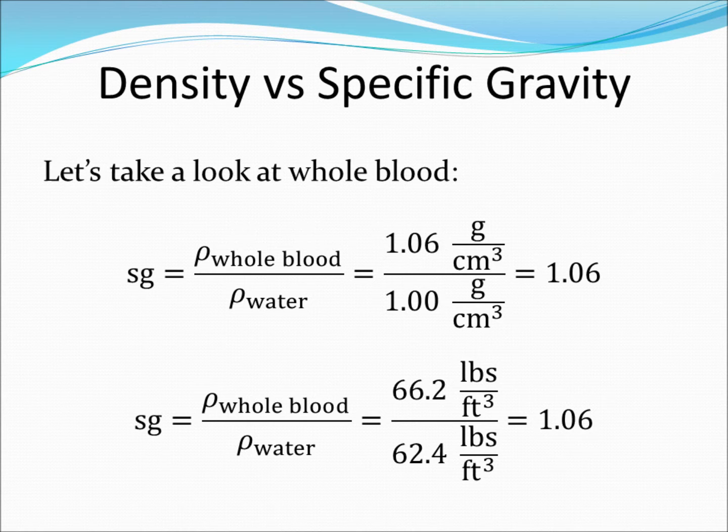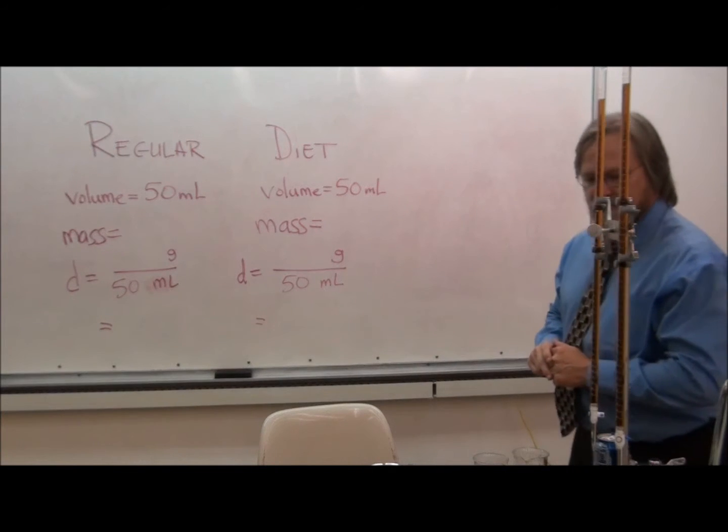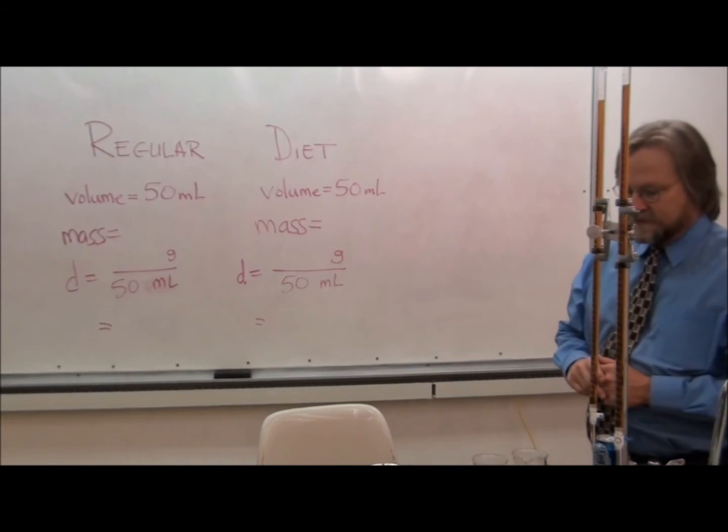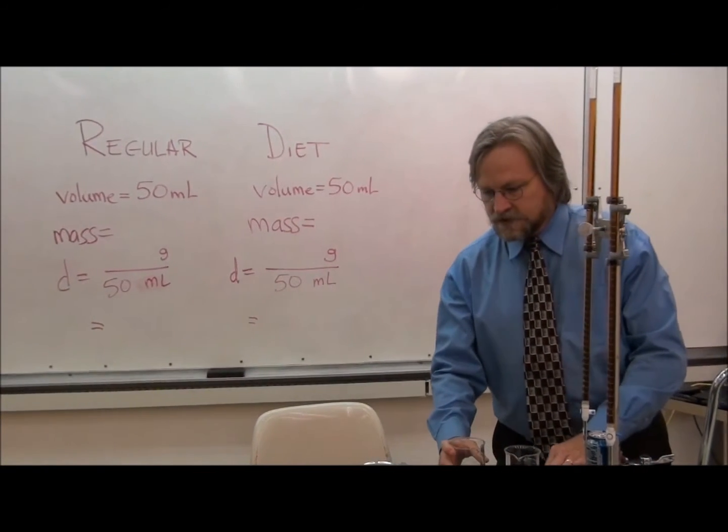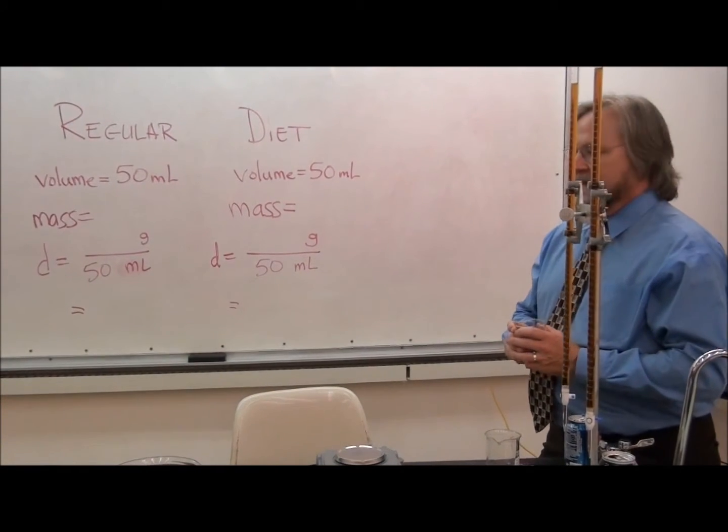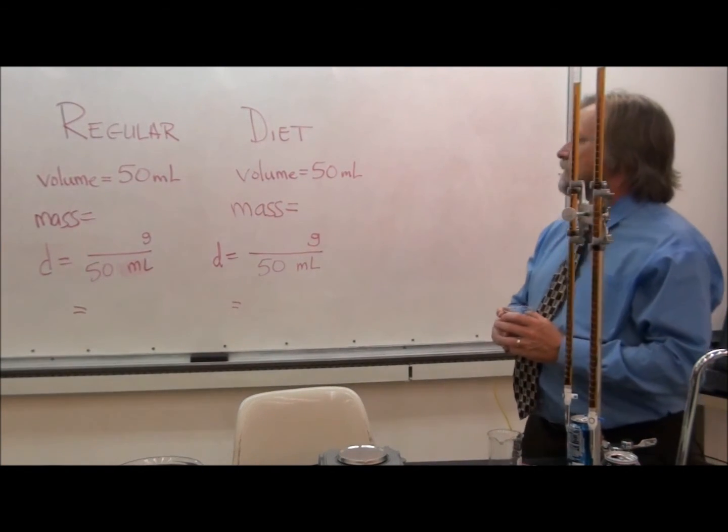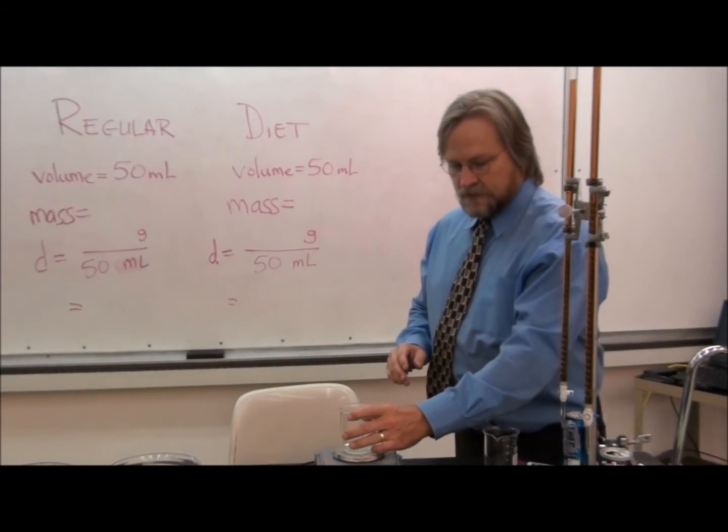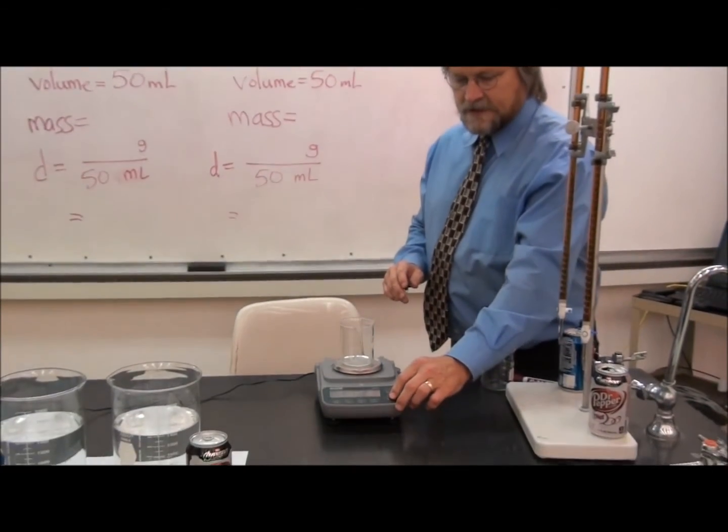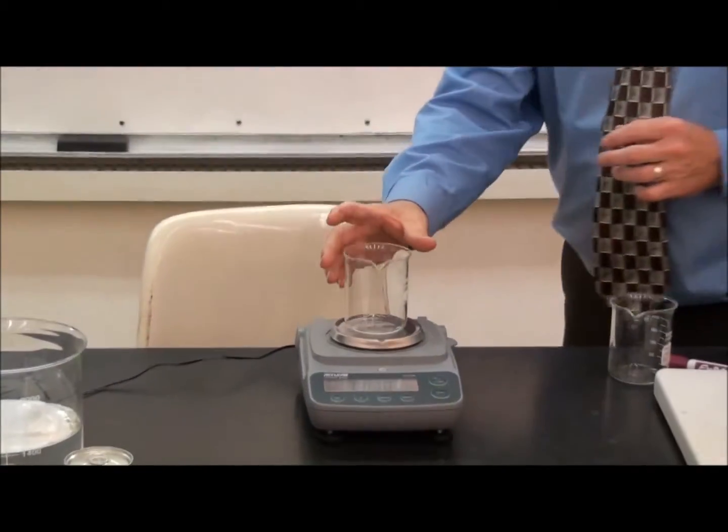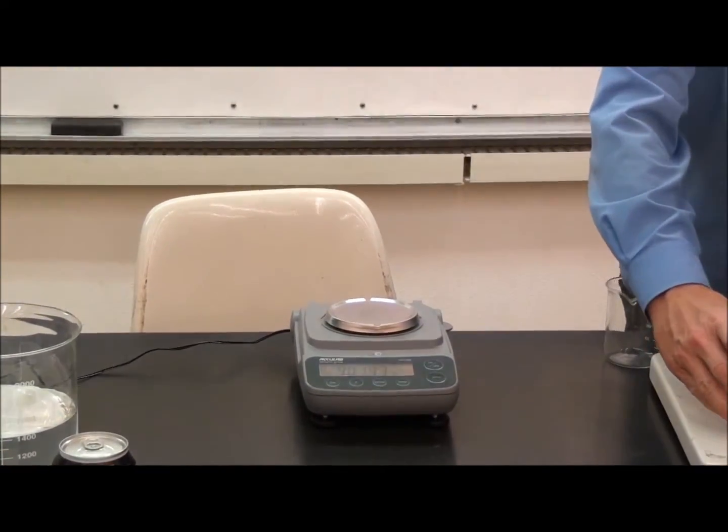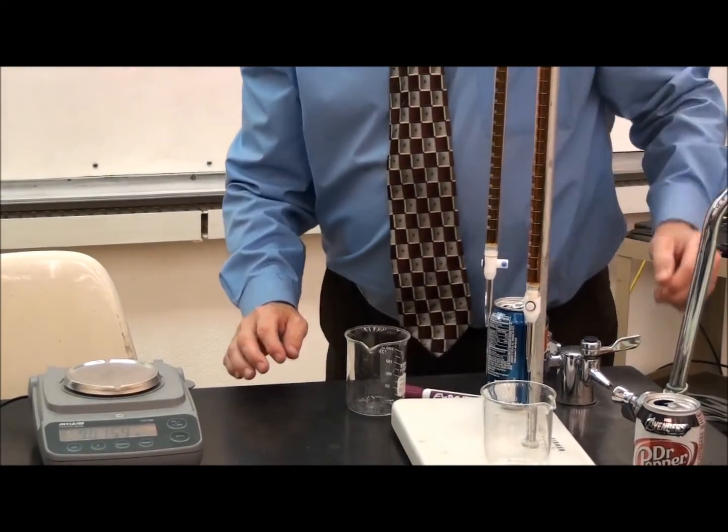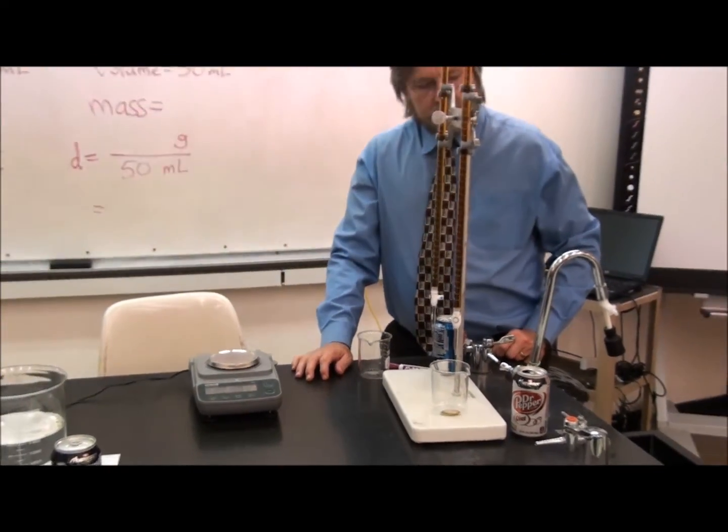Now let's put to use what we've just learned. Here we have Dr. Schubert with two burettes full of pop. One is regular Pepsi, closest to him, and one is Diet Dr. Pepper, closest to the camera. We will use these burettes to dispense a known volume of liquid. Dr. Schubert will tare the first beaker so we do not include the mass of the beaker. He will now drain 50 milliliters of Diet Dr. Pepper into the beaker.